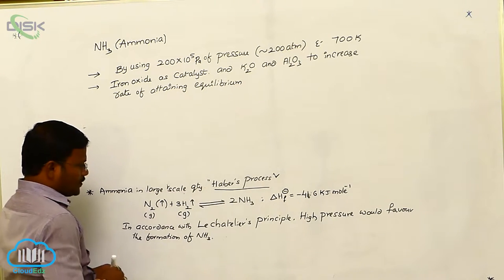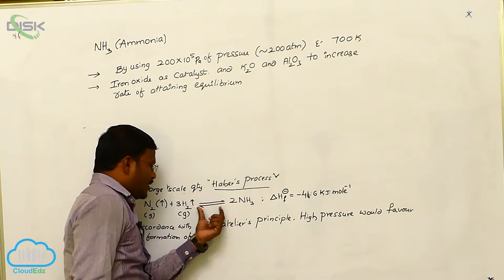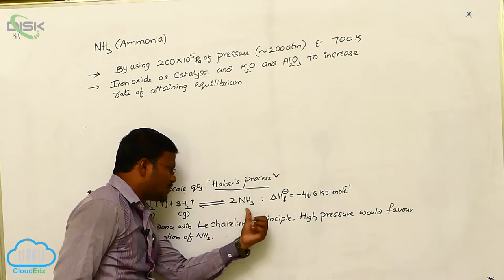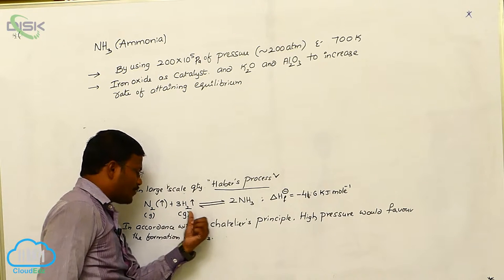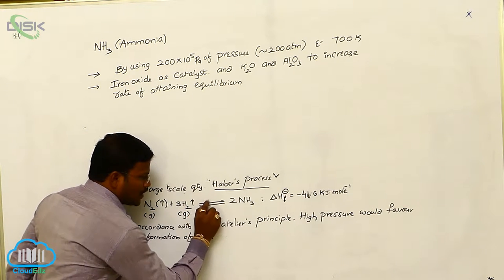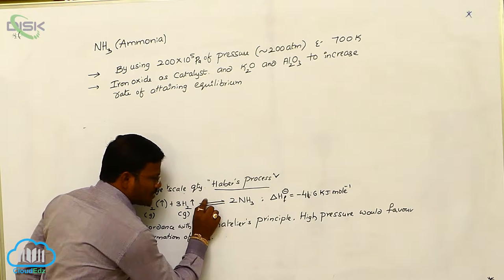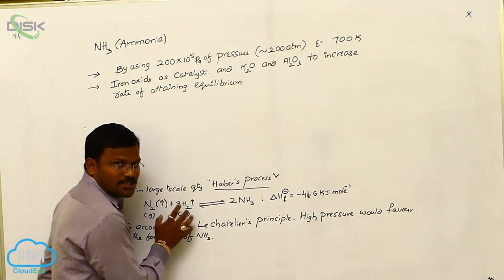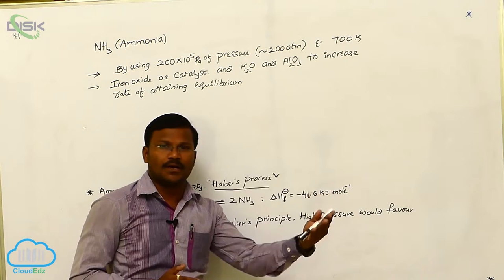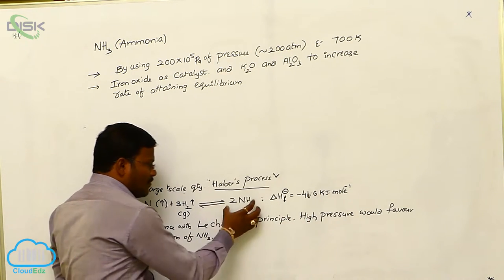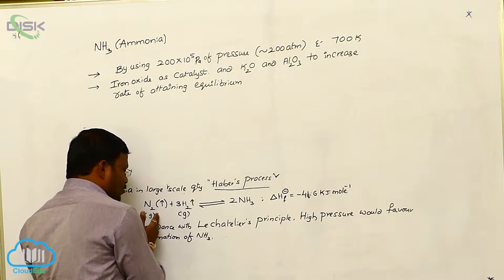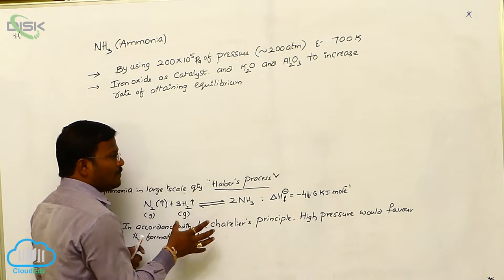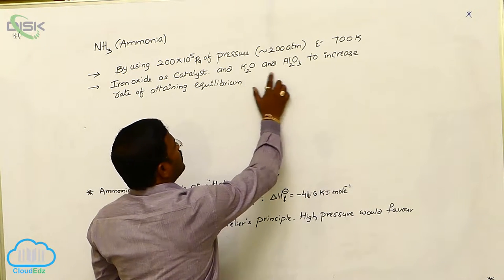Two processes simultaneously take place in Haber's process to yield ammonia from nitrogen gas and hydrogen gas. There are two steps: one is the forward step and one is the backward step. In the forward step, nitrogen gas reacts with hydrogen and yields ammonia. In the backward step, the same ammonia can dissociate and produce nitrogen and hydrogen gases. The equilibrium rapidly takes place in the presence of potassium oxide and alumina.